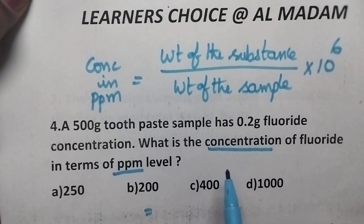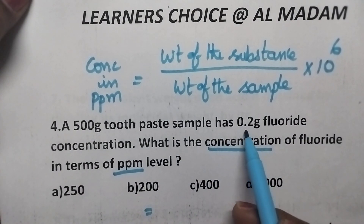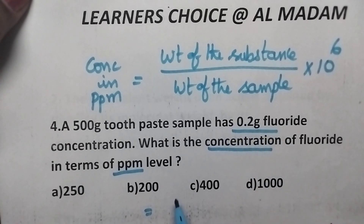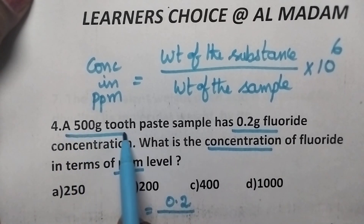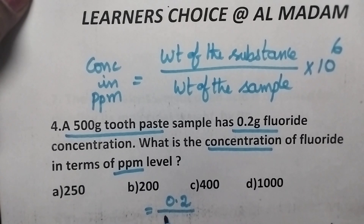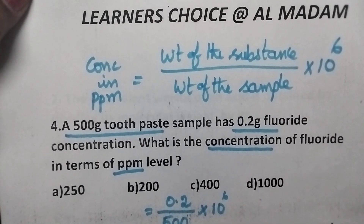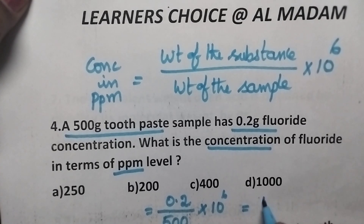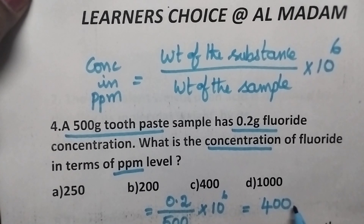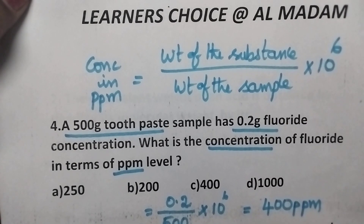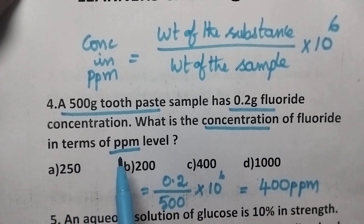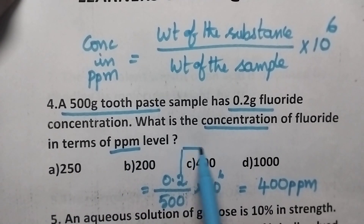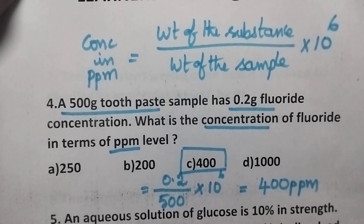In this problem, the substance is fluoride, whose weight is 0.2 grams, and the weight of the sample — the toothpaste — is 500 grams, into 10 to the power 6. On calculating, it will be 400 PPM. So the concentration of the fluoride in PPM is 400 PPM, and hence the right option is C.